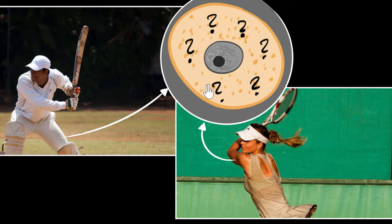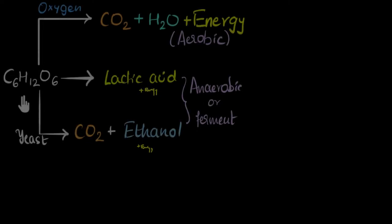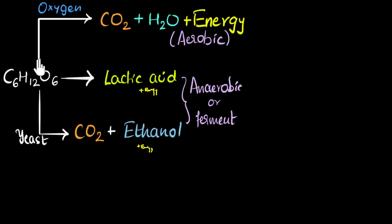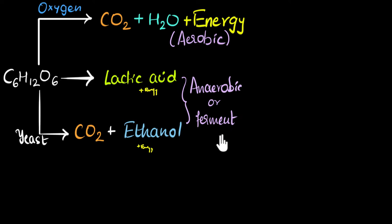It's the respiration that gives us energy. Cells can take glucose and break it apart to give us energy — this is called respiration. This can be done in the presence of oxygen, which gives us a lot of energy — we call this aerobic. And it can be done in the absence of oxygen too, where we get a little bit of energy — this is called anaerobic respiration or fermentation.